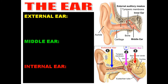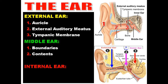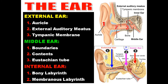The external ear is divided into three parts: the auricle, the external auditory meatus, and the tympanic membrane. Regarding the middle ear, I will talk about the boundaries, the contents, and the Eustachian tube. Regarding the inner ear, it is a membranous part inside a bony part, so I will talk about the bony labyrinth and the membranous labyrinth.